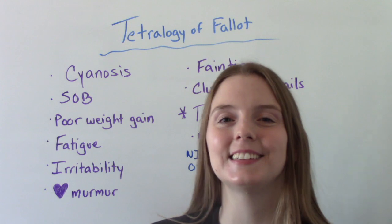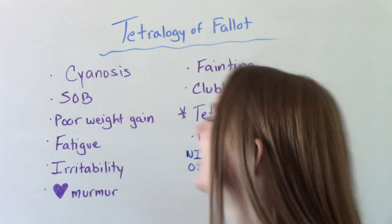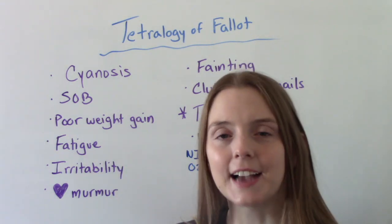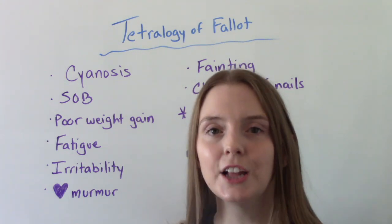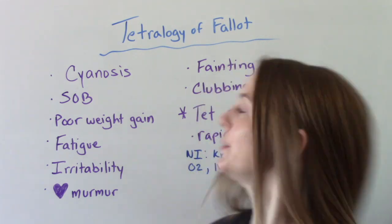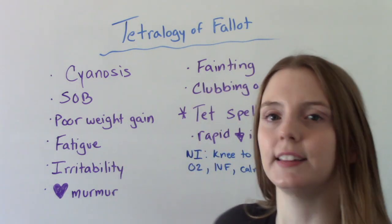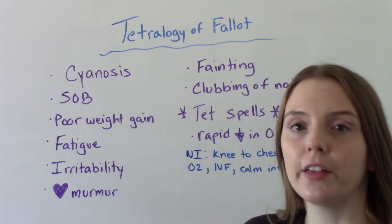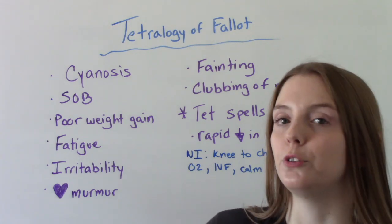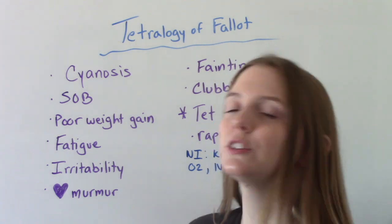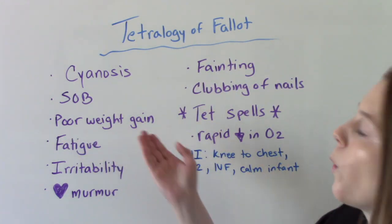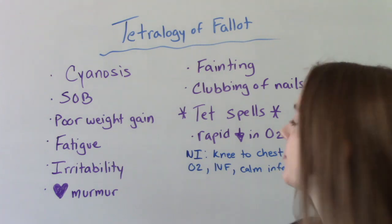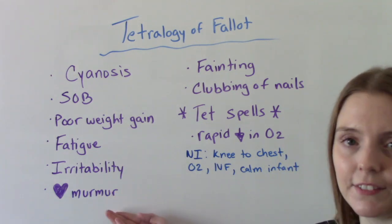Now let's talk about the signs and symptoms. You're going to notice a pattern — a lot of these are related to that lack of oxygen. We talked about how deoxygenated and oxygenated blood mix and then get distributed, so they're not getting good oxygen throughout the body. Symptoms include cyanosis — the bluish discoloration of the skin and mucous membranes — shortness of breath or rapid breathing (remember a newborn's normal breathing rate is 110 to 160), poor weight gain, fatigue, easily fatigued with basic things like eating, irritability, and possibly an obvious heart murmur.